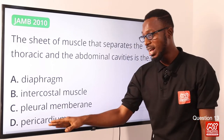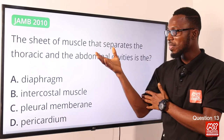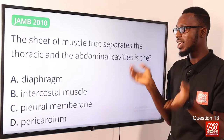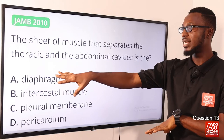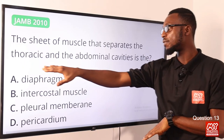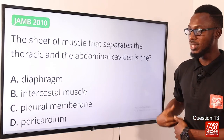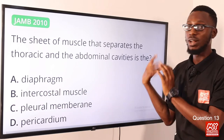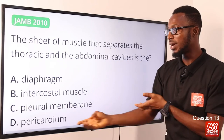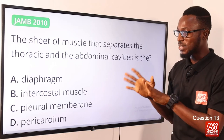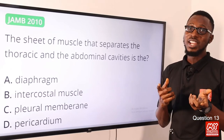The pericardium offers protection for the heart, which is also enclosed within the ribs. To summarize: the diaphragm separates the thoracic cavity from the abdominal cavity; intercostal muscles are found between the ribs; the pleural membrane encloses the lungs and is airtight and waterproof; the pericardium protects the heart. The correct option is option A, the diaphragm.